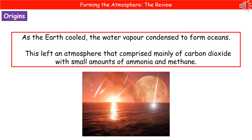As time went on, the Earth actually started to cool. And as a result of that cooling, the water vapor condensed to form the oceans. So the water vapor was out of our atmosphere, but the atmosphere then was comprised mainly of carbon dioxide.